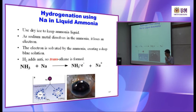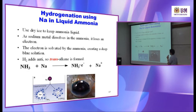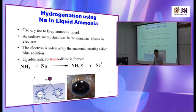Hydrogenation also includes using sodium in liquid ammonia. Dry ice is used to keep ammonia liquid because ammonia has a very low boiling point. If exposed to room temperature, it will simply evaporate, so you need to maintain it in liquid form.